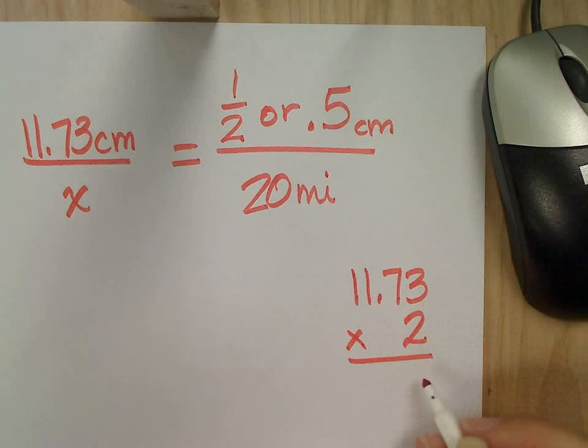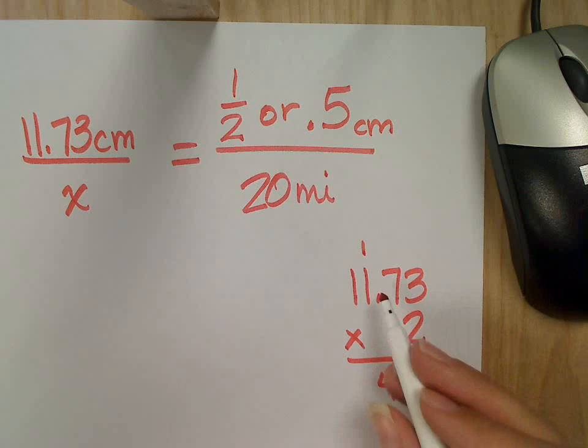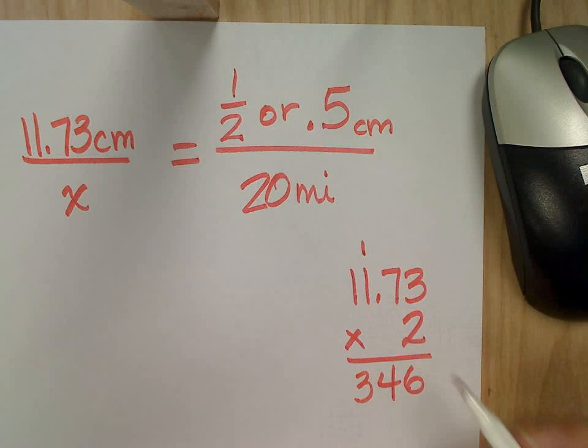2 times 3? 6. 2 times 7? 14. 2 times 1? 3. Plus 1 is 3. 2 times 1? 2.